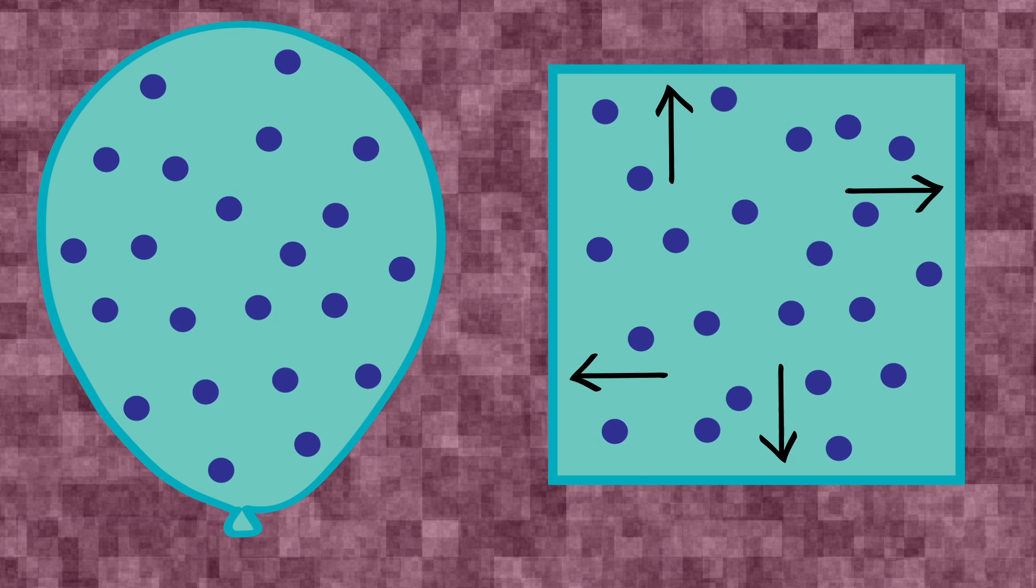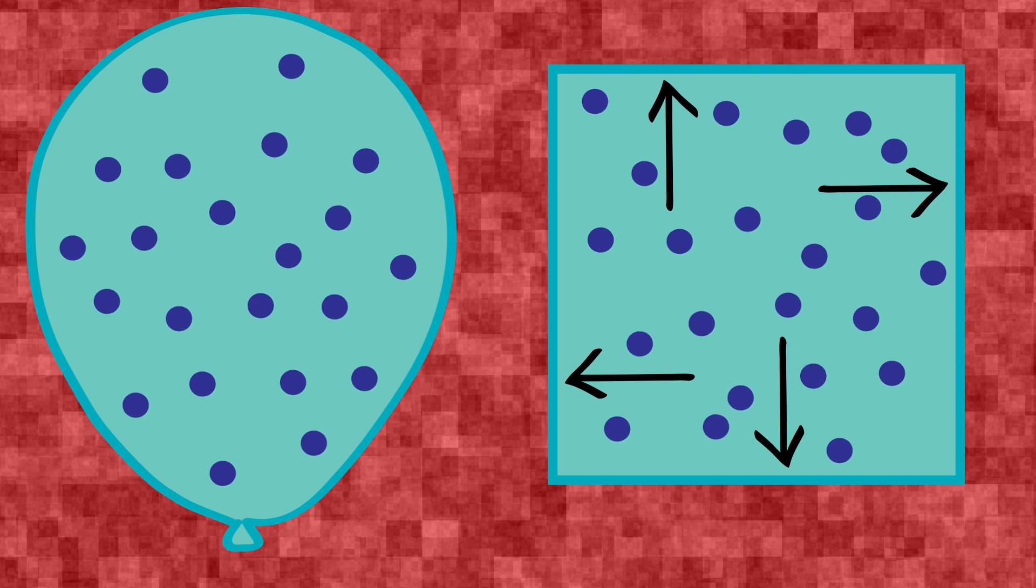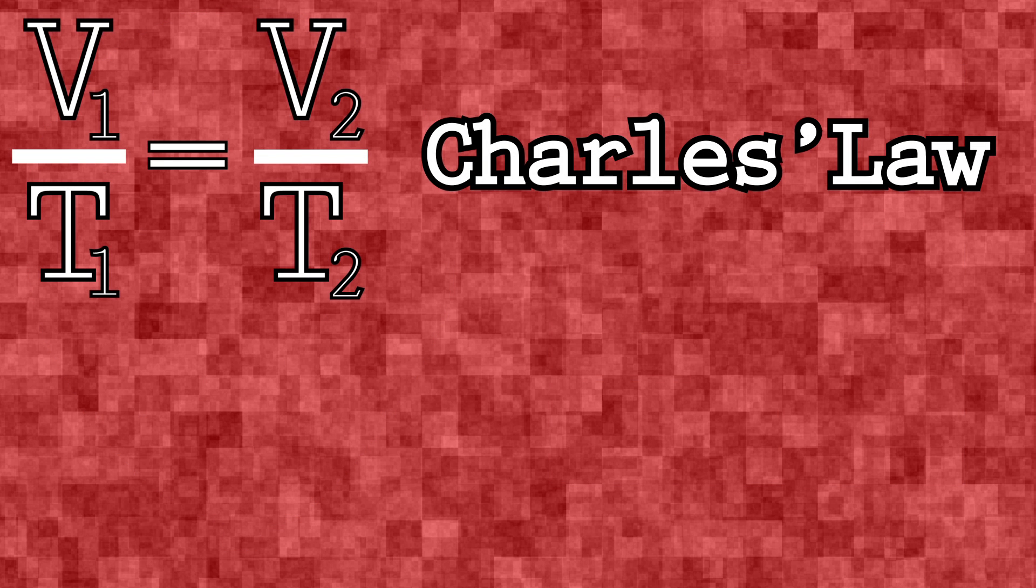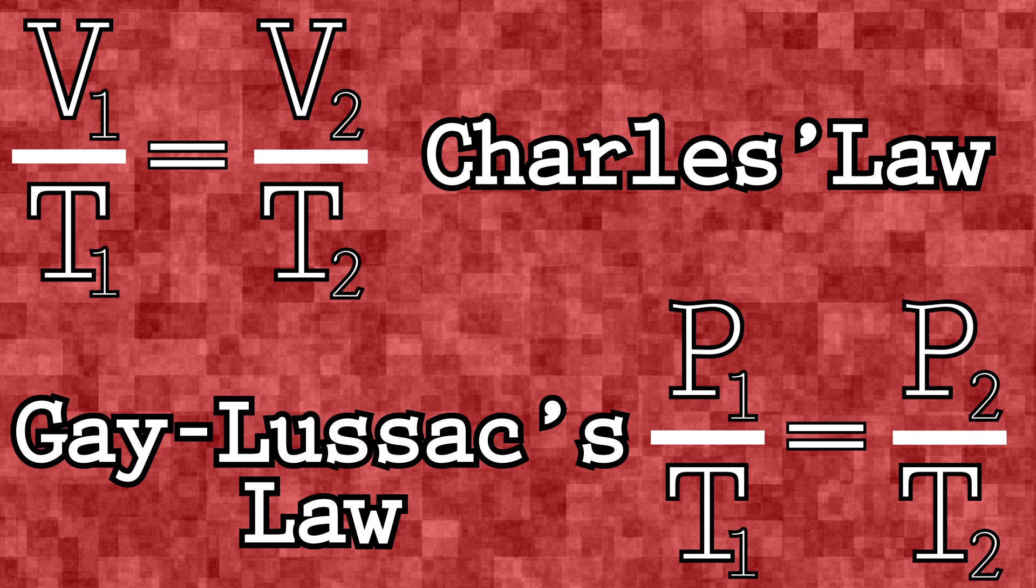But if you heat a gas up, the molecules move faster, increasing the pressure and temperature of the gas. Here we have two of the gas laws, Charles's law, which states that an ideal gas's volume is proportional to its temperature, and Gay-Lussac's law, which states that an ideal gas's pressure is proportional to its temperature.